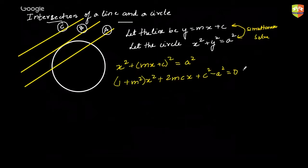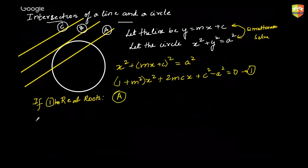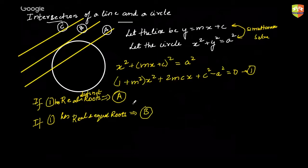If this quadratic equation — let's call it equation one — has real and distinct roots, it will lead to case A. If it has real and equal roots, it will lead to case B, that is, the line would touch the circle. And if it has imaginary roots, it will lead to case C.